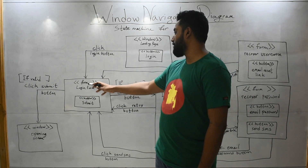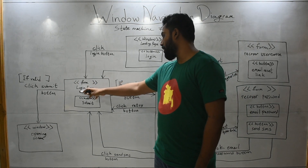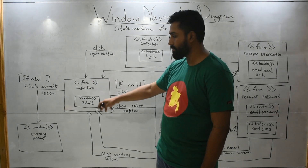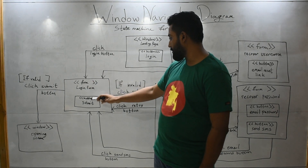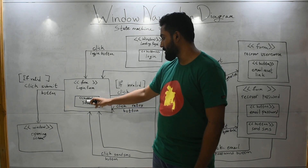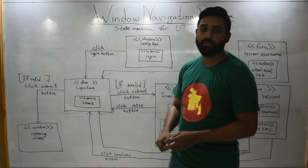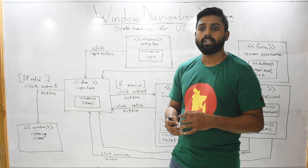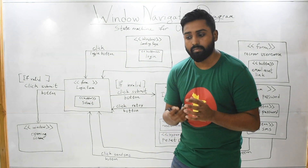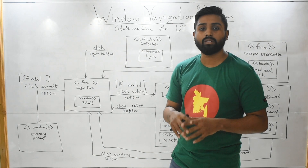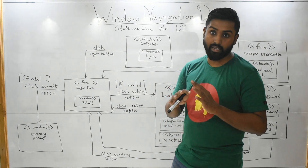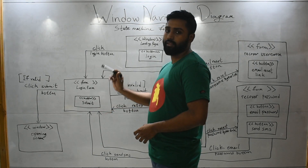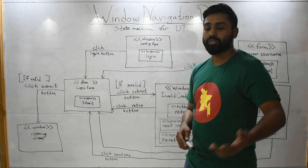We write the name of the form — 'login form' — with the stereotype 'form' within the stereotype notation. We also add another button: 'submit'. In the login form there is, say, a user ID and password input boxes, but we are not bothered about those — that's not of relevance here. We're more interested in the buttons that take you somewhere.